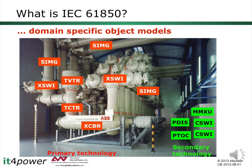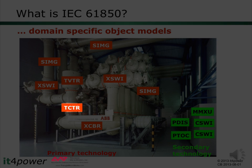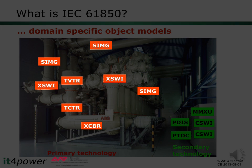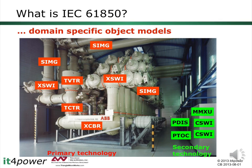61850 is more than just about communication — it also defines a domain-specific object model. Looking at the example of the switchgear, we have models called logical nodes, which are building blocks for the semantic object models defined in 61850. Examples include XCBR at the bottom, which is the model of the circuit breaker; XSWI for switches like disconnecting or earthing switches; TCTR for current transformers; voltage transformers; and SIMG for gas density monitoring in a gas insulated switchgear. All these logical nodes provide all the data and information needed to interface to our application and to the process.